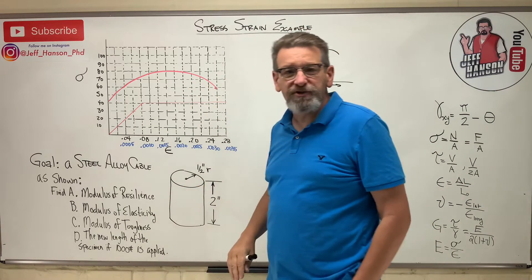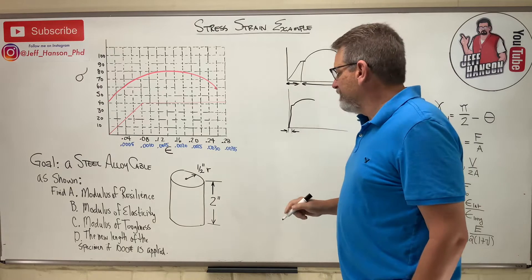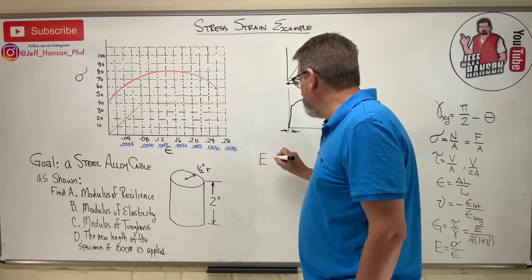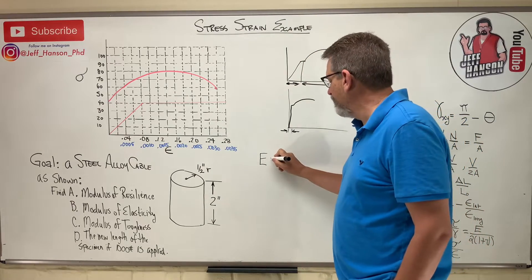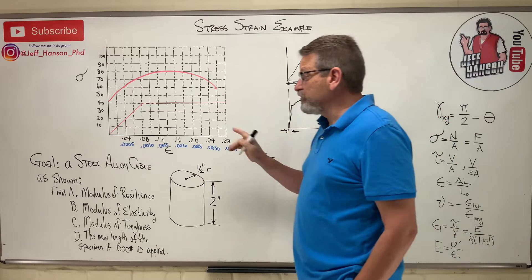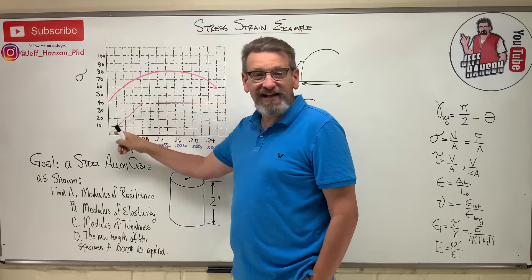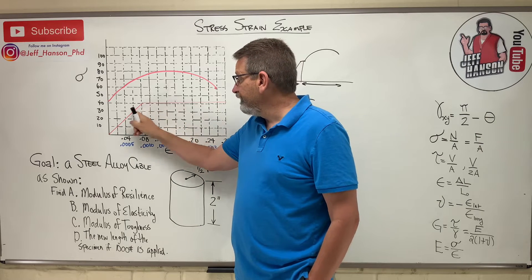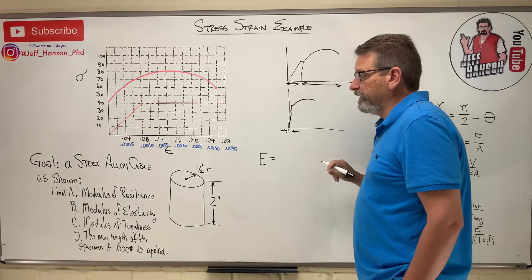They ask us to find a few things regarding this material using this graph. Number one: the modulus of elasticity — that's big E, capital E. The modulus of elasticity, as we covered in the last video, is the slope of this line in the elastic region of the curve. So this elastic region is what we're going to use.